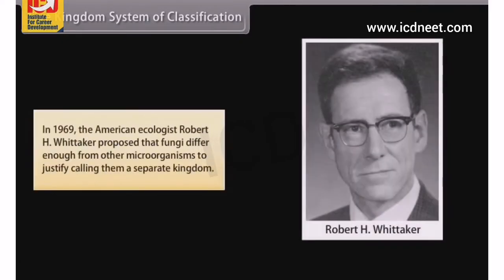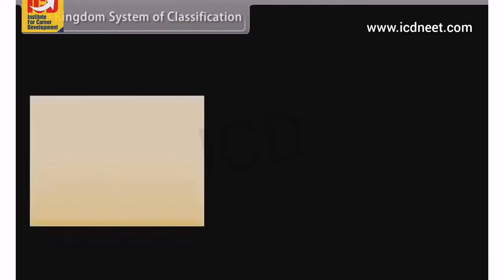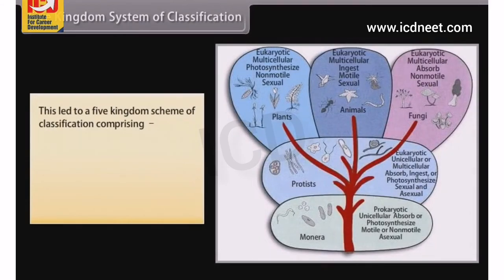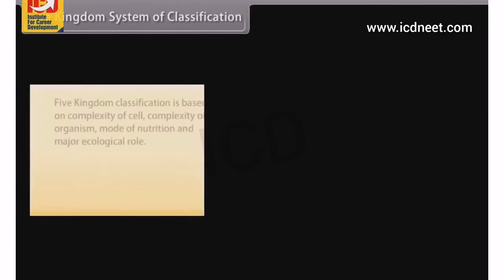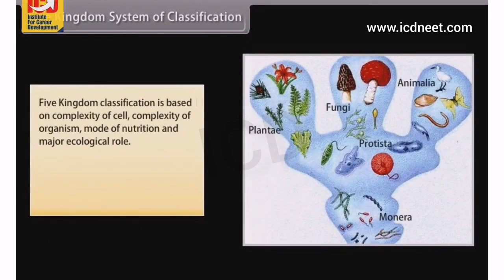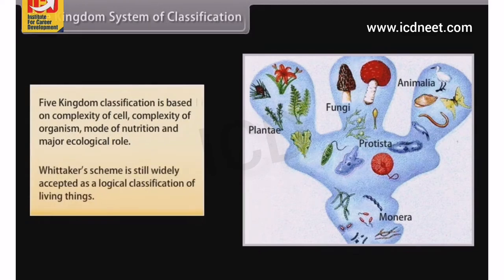The 5 Kingdom System of Classification: in 1969, American ecologist Robert H. Whittaker proposed that fungi differ enough from other microorganisms to justify calling them a separate kingdom. This led to a 5 Kingdom scheme comprising Monera, Protista, Fungi, Plantae, and Animalia. The 5 Kingdom classification is based on complexity of cell, complexity of organism, mode of nutrition, and major ecological role. Whittaker's scheme is still widely accepted as a logical classification of living things.